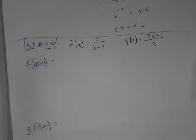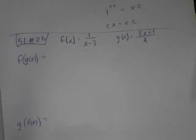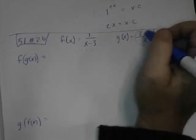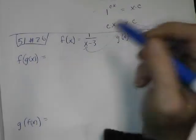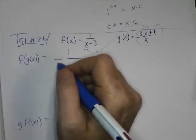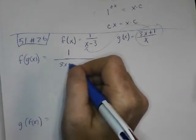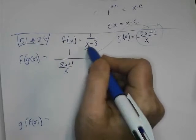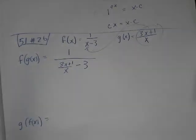I don't know if that's going to be enough room for me to do it both ways. So f of g of x says take g of x and plug it in to f of x. So that's going to be 1 over, oh, this ugly thing, 3x plus 1 over x. I plugged it in for the x, minus 3.